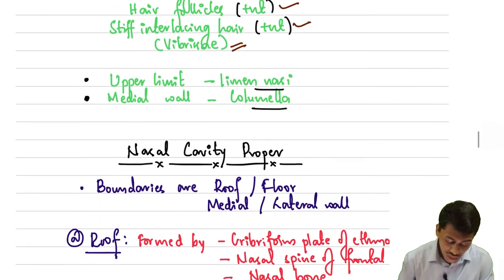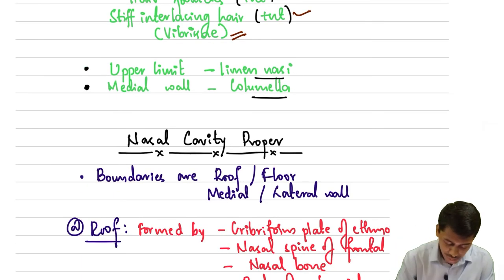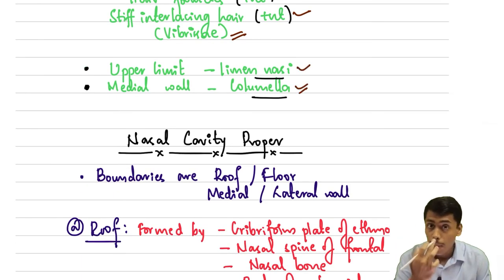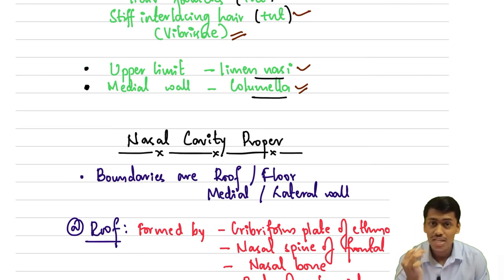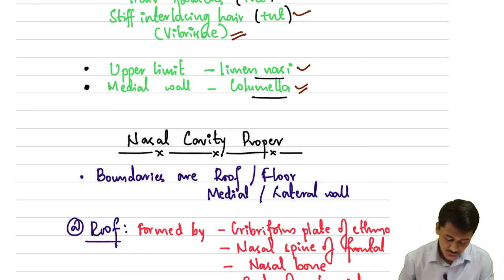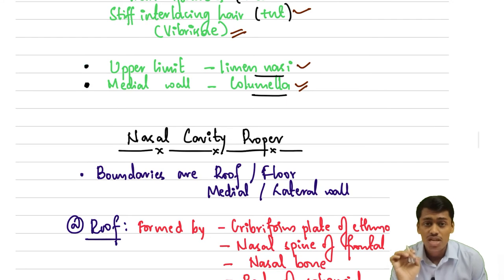The vestibule also has an upper limit called the limen nasi, a medial wall called the columella. These are the key structural features of the vestibule of the nose.